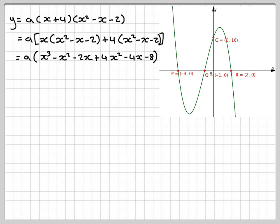Be careful with the signs and things. So collecting together like terms, we get a times x cubed, minus x squared plus 4x squared gives me 3x squared, minus 2x and minus 4x gives me minus 6x, still got the minus 8.